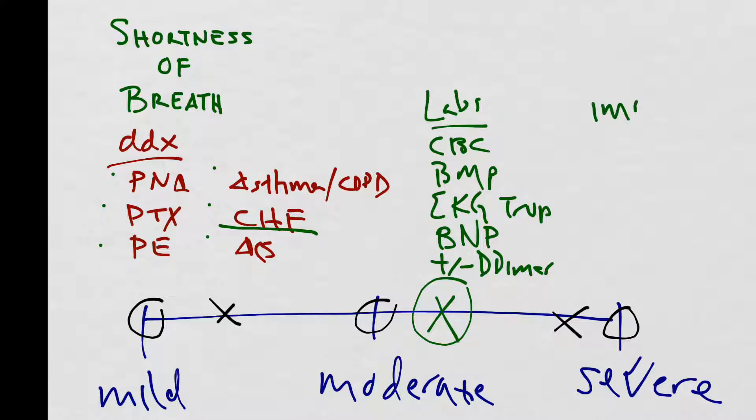For imaging, you'd want to get a chest x-ray to make sure your patient isn't having a pneumonia or a pneumothorax. If your D-dimer comes back positive or your patient is high risk for his Wells score, you may need to also get a CT to further assess for pulmonary embolism.